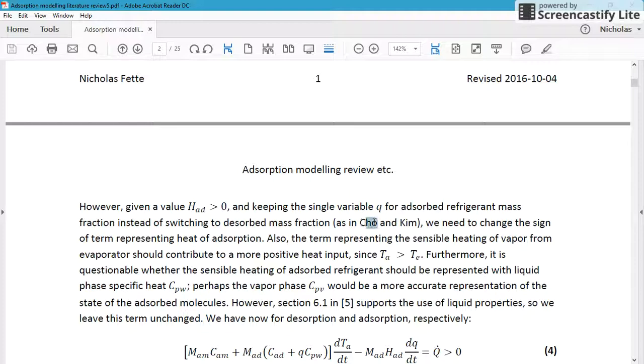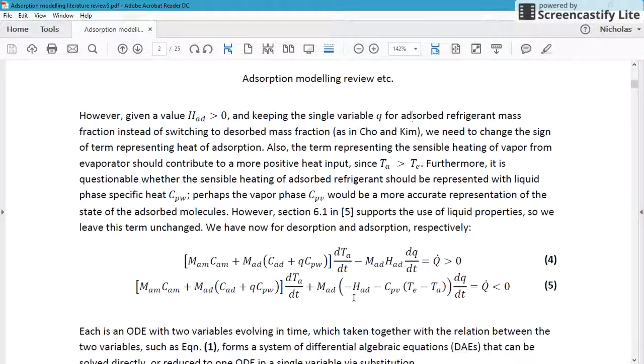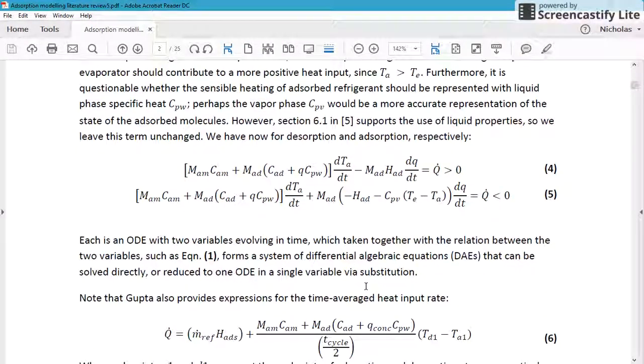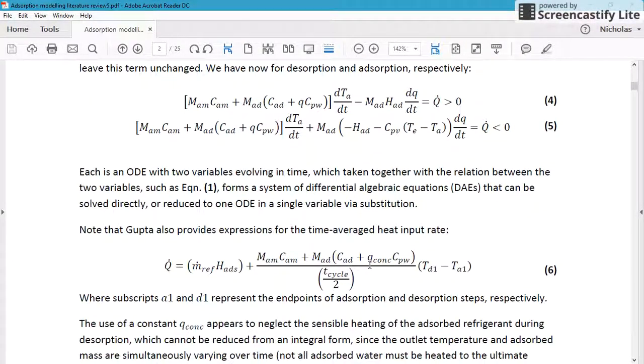So Cho and Kim have a paper. It's referred to in the dissertation, in the references in this document. And it's a little bit ambiguous. Other papers are a little bit better about describing what's used.